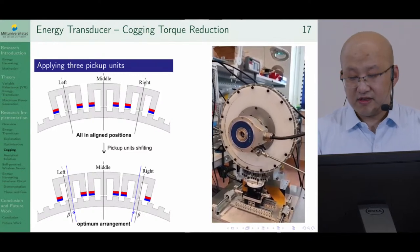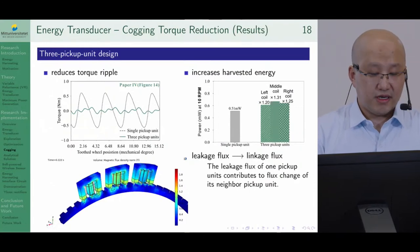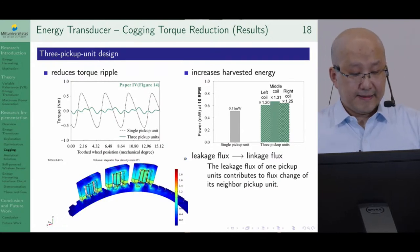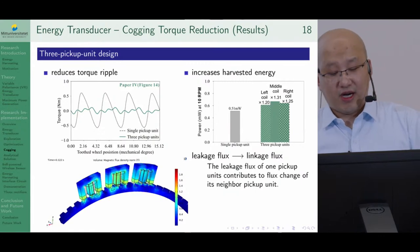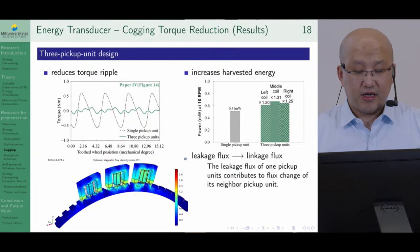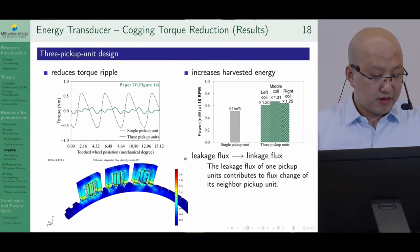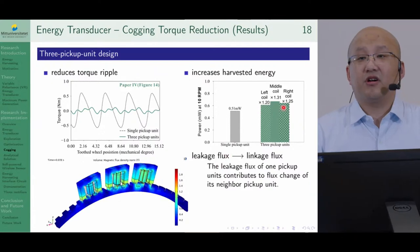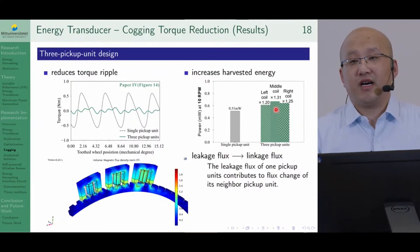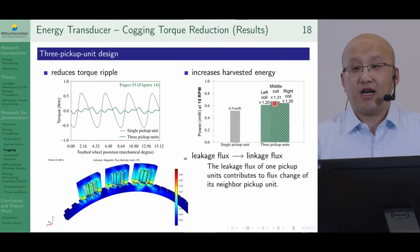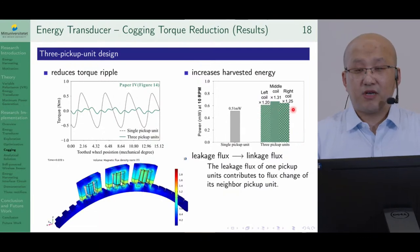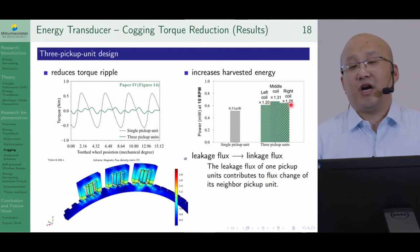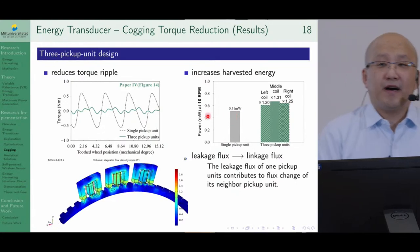The results show we can reduce the torque ripple by more than 80%, down to less than 20% compared to a single pickup unit. Additionally, the three-unit arrangement increases power because leakage flux from the left and right units becomes linkage flux for the middle unit, increasing its power generation. Similarly, the middle unit shares its leakage flux to the left and right units, giving slightly higher power than a single pickup unit. This increased power output allows the sensor to increase its sample rate.